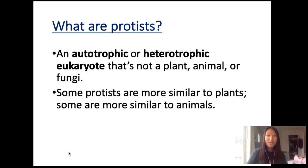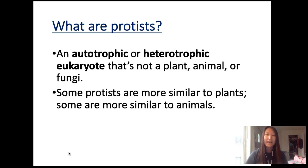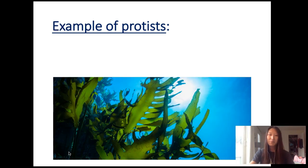Some protists are more similar to plants, and some are more similar to animals. We're going to see a cladogram in a little bit and you're going to see that protists are all over the place. Most protists are unicellular — just something to remember.